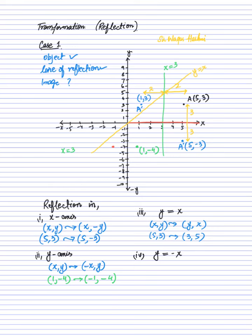The fourth case is reflection across the line y equals minus x, which also passes through the origin but with a negative gradient. When reflecting across y equals minus x, x comma y maps onto minus y comma minus x. Applying this to point A at 5 comma 3, the image after reflection is minus 3 comma minus 5.